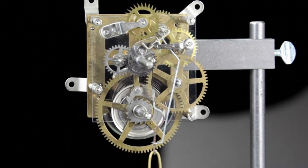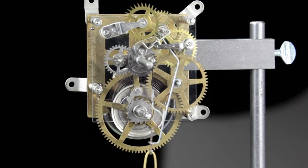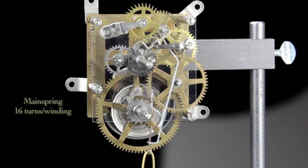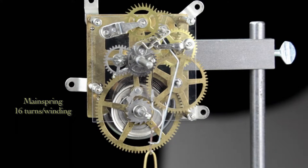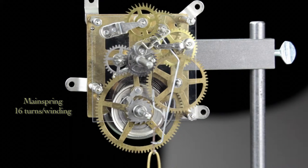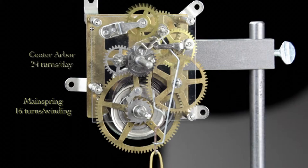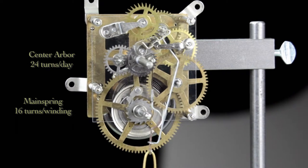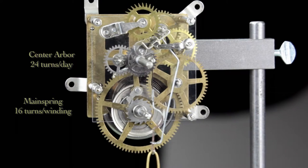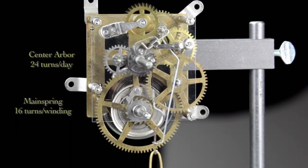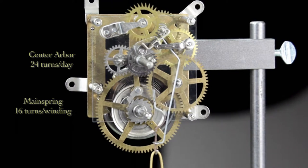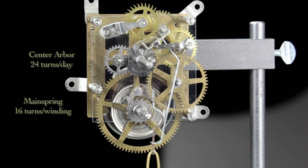Another function of the wheel train is to gear up the relatively few turns of power stored in the mainspring, usually around 16 full turns, so the clock will operate a full eight days on one winding. At the very least our center arbor must turn once per hour or 24 times per day. If we were to use the 16 turns of power stored in our mainspring directly without going through the wheel train, the power from the spring would only last 16 turns or 16 hours.